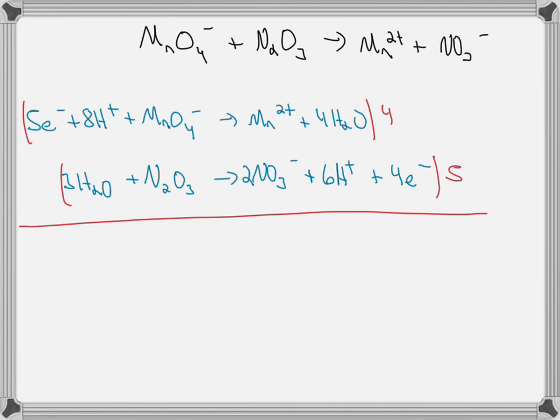We then sum them up, and the electrons will cancel. So we have four times eight is 32, and we've got five times six is 30, so that means we'll have two H+ remaining on the left-hand side. And then we've got four times one, so we've got four MnO4-.